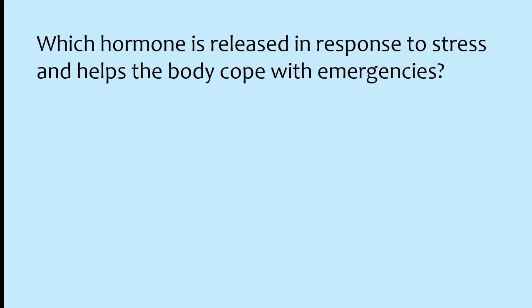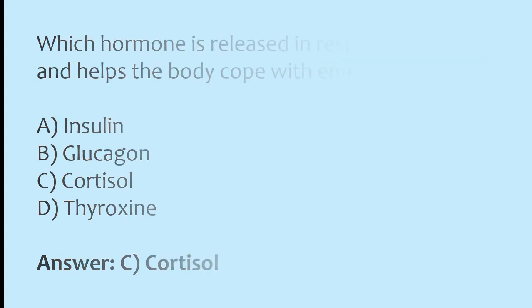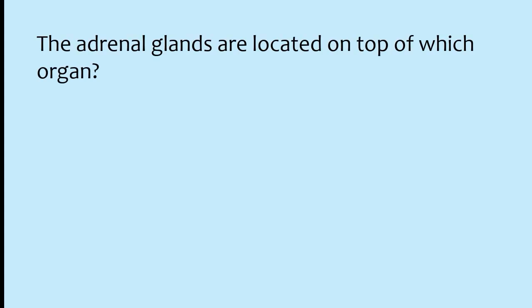Which hormone is released in response to stress and helps the body cope with emergencies? The adrenal glands are located on top of which organ? Options: liver, kidneys, pancreas, spleen. The correct answer is option B: the adrenal glands are located on top of the kidneys.